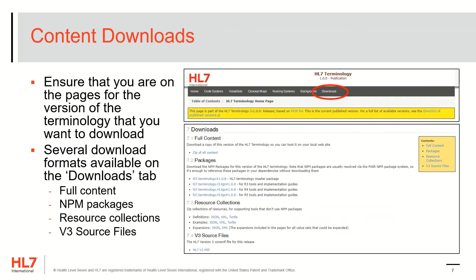For those using tooling that does not require NPM packages, you can download the artifact definitions, examples, and expansions in JSON, XML, and Turtle formats. The HL7 version 3 core MIF file is also available, and our hope is that other HL7 product family specific release formats will be made available for download in the future.